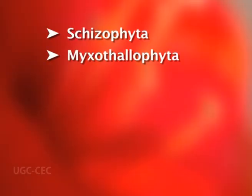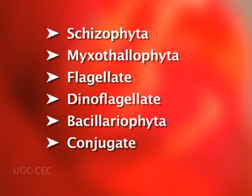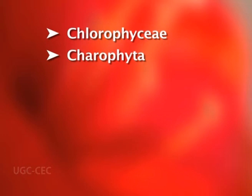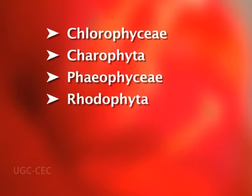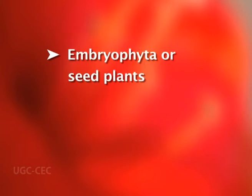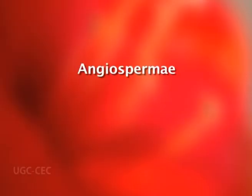Engler and Prantl included the keys and descriptions of all known genera of plants from algae to angiosperms. Their system of classification is based on the trend of evolution in existing families. In this system the plant kingdom is divided into 14 divisions: Schizophyta, Myxothallophyta, Flagellatae, Dinoflagellatae, Bacillariophyta, Conjugatae, Heterokontae, Chlorophyceae, Charophyta, Phaeophyceae, Rhodophyta, Eumycetes, Archegoniatae, and Embryophyta (seed plants). The division Embryophyta is subdivided into Gymnospermia and Angiospermia.